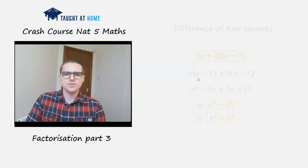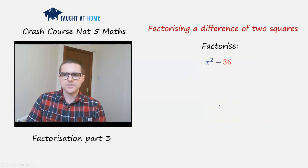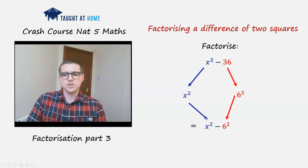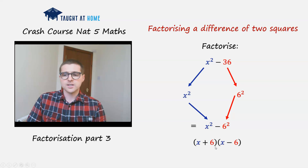Let's have some examples. Let's factorise x squared minus 36. We recognise that x squared is a square, 36 is a square, and it's a difference — we've got a difference of two squares. So it can be rewritten as x squared minus 6 squared, or more fully, x plus 6 times x minus 6.